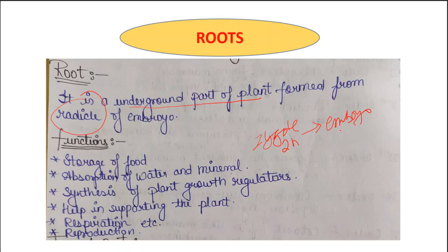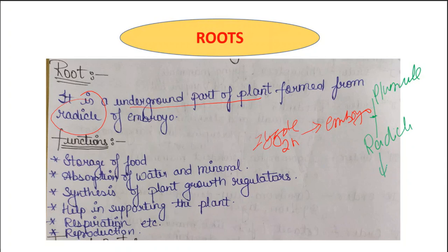This embryo passes through different developmental stages and finally forms a small plantlet. When an embryo is completely developed, the plant's embryo has two axes of formation — it forms a plumule and the second axis is known as radicle. The radicle is the axis of the embryo which is located downward, and the plumule is the axis located in an upward direction. The radicle shows geotropic movement towards the soil, while the plumule shows negative geotropism and moves away from the soil.